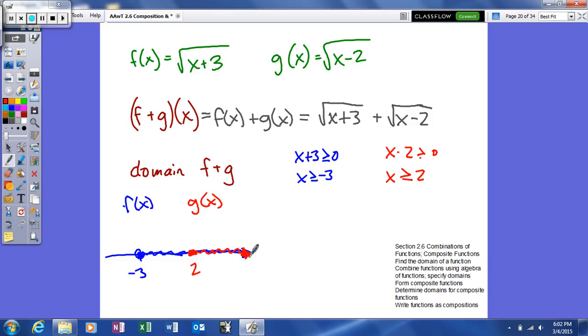Alright, so now our domain for our answer for f plus g of x is actually going to be the one that limits the domain the most. Hopefully in chemistry, you've studied what is a limiting reagent. And what that means is when you combine two substances and they form a compound, you're going to be limited by one that's going to run out first.